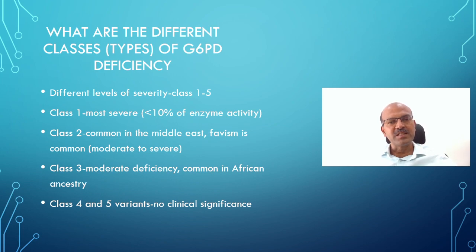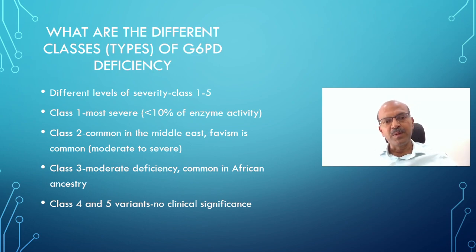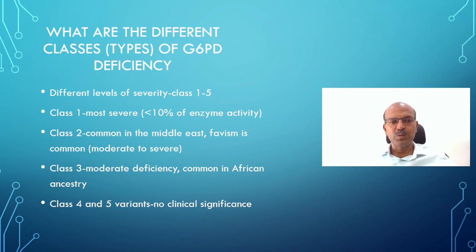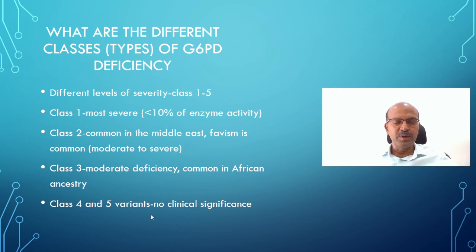There are different subtypes of G6PD deficiency, called classes 1 to 5. Class 1 is the most severe and not very common — enzyme level is less than 10% of normal activity. Class 2 is common in the Middle East and favism is very common; it can be moderate to severe. Less than 10% enzyme activity is severe; between 10 to 40% is moderate. Class 3 is also moderate deficiency, common in African ancestry, with more intermittent hemolysis. Class 4 and 5 variants are of no clinical significance; Class 5 actually has increased enzyme activity.